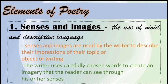Now let's get to know about the elements of poetry. Number one: senses and images. It is the use of vivid and descriptive language in your poem. These are used by the writer to describe their impressions of their topic or object of writing. In short, the writer uses carefully chosen words to create imagery that the reader can experience through his or her senses.